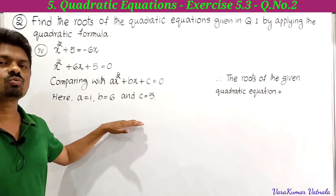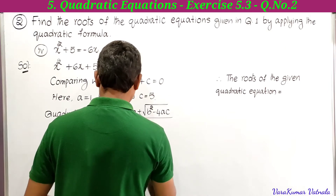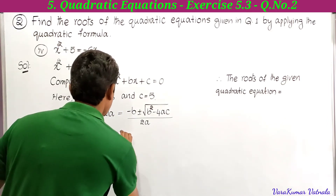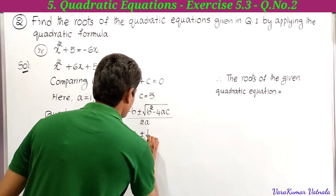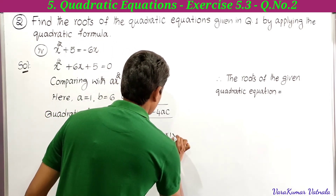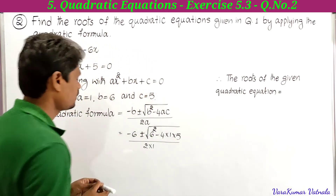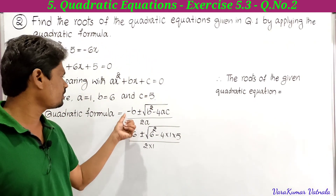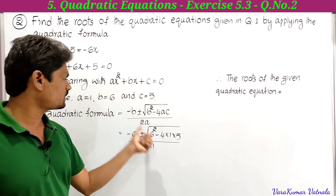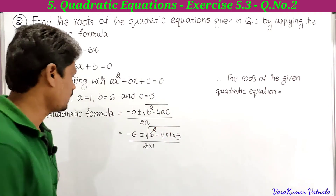The quadratic formula is minus b plus or minus square root of b² minus 4ac divided by 2a. Substituting: b = 6 so minus 6, plus or minus square root of 6² minus 4 × 1 × 5, divided by 2 × 1.